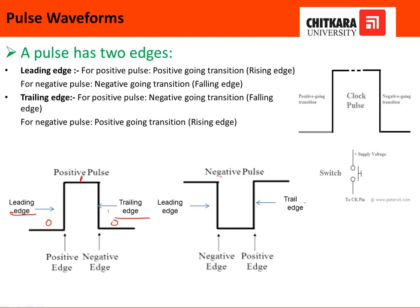For a negative pulse, it is exactly the opposite: from 1 to 0 is the leading edge, which is called the negative edge, and from 0 to 1 is the trailing edge, which is called the positive edge. Keep in mind these two things separately — positive pulse and negative pulse are exactly opposite to each other.